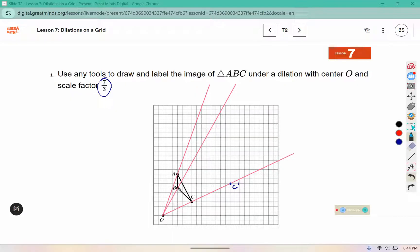B is 1, 2, 3 lines from O. So 3 times 7 is equal, 3 times 7 is 21 divided by 3 is 7. So it needs to be 7 lines down. So here's 1, 2, 3, 4, 5, 6, 7.